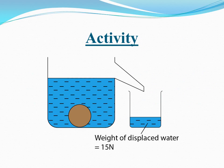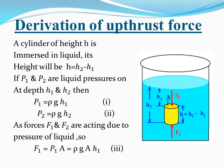You can observe this by performing a simple activity. Take a beaker and pour some water or any other liquid. Now if you put a metallic ball inside the liquid, some of the liquid will move to another beaker. Measure the weight of this displaced liquid — it will be equal to the upthrust force which acts on the ball.